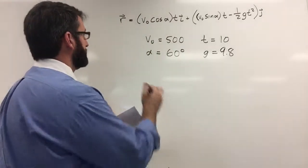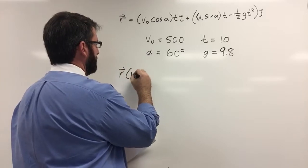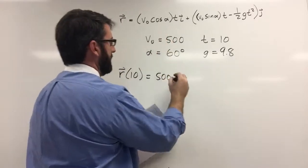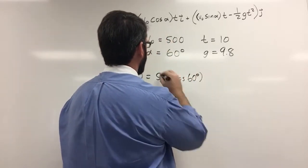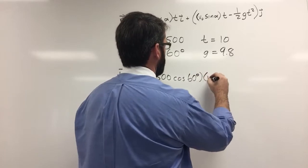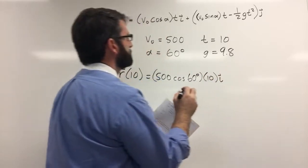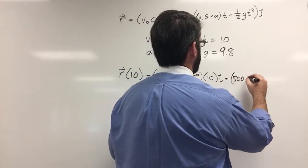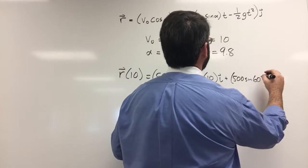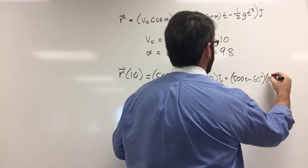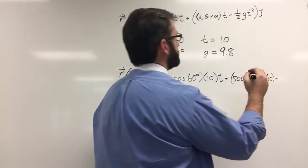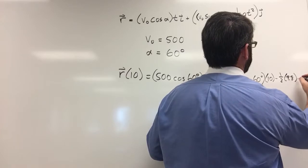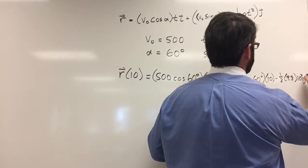All right, now we're ready to plug this in. And so R, evaluated at 10 seconds, is going to be 500 times the cosine of 60 degrees times 10i plus 500 sine of 60 degrees times 10, minus 1 half times 9.8 times 10 squared times j.